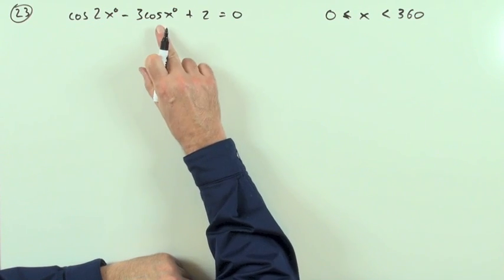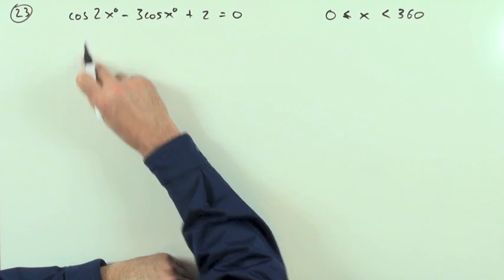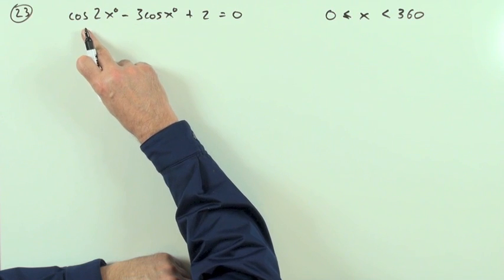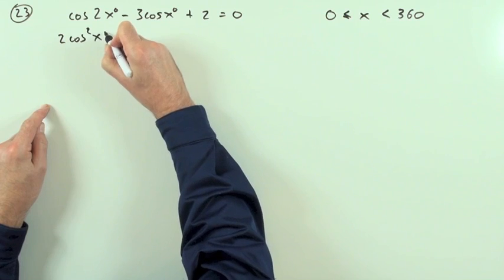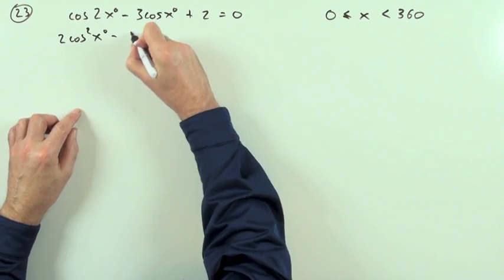First thing would be multiply that out. If it's cosines, I'll use the cosine form of the double angle, so it'll be 2cos²x minus 1. That's going to change into 2cos²x minus 1 minus 3cos x plus 2 equals 0.